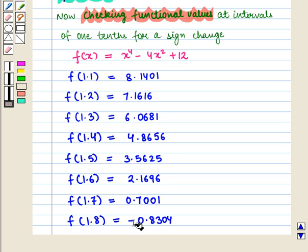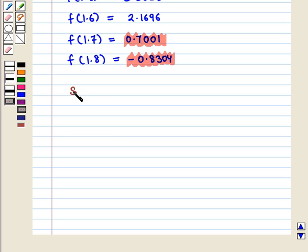Here we see a sign change again. So the zero is between x = 1.7 and x = 1.8.